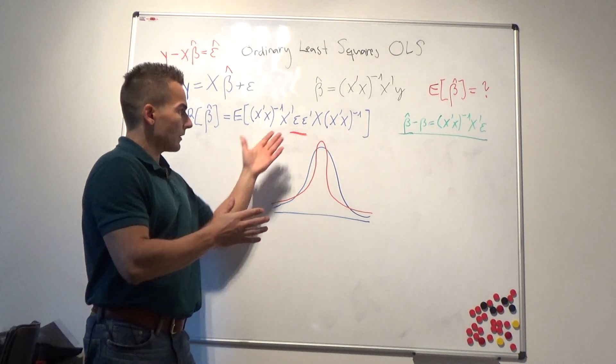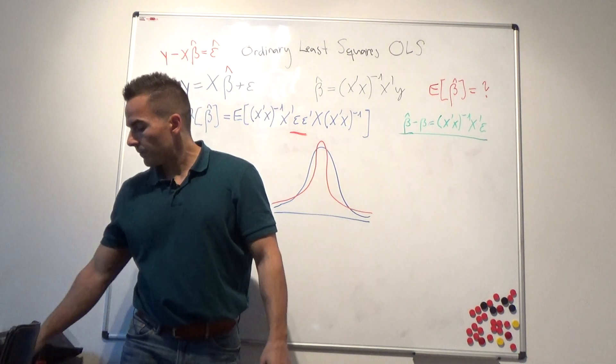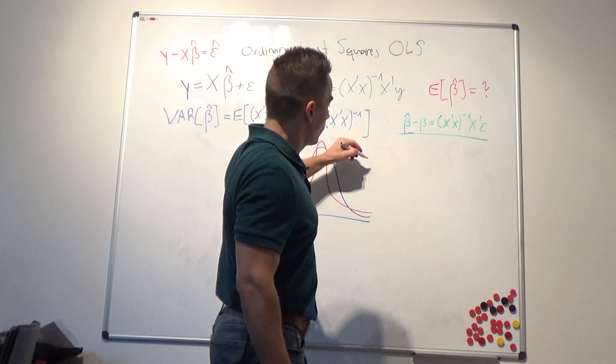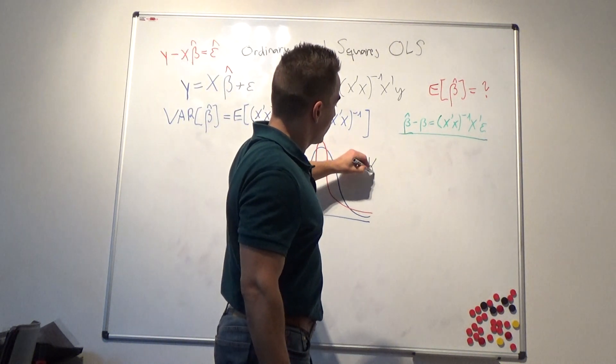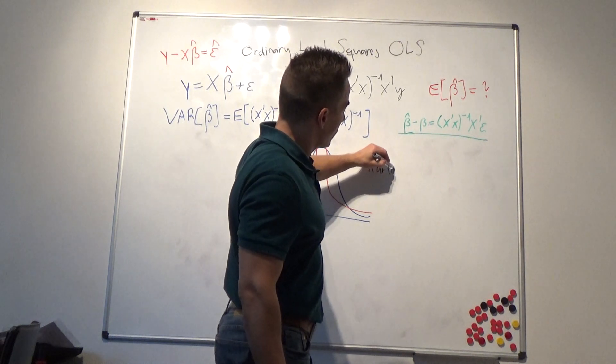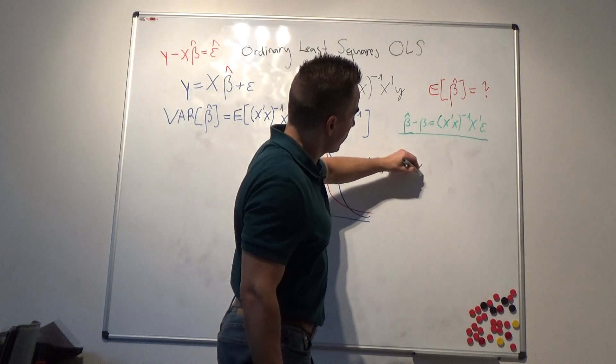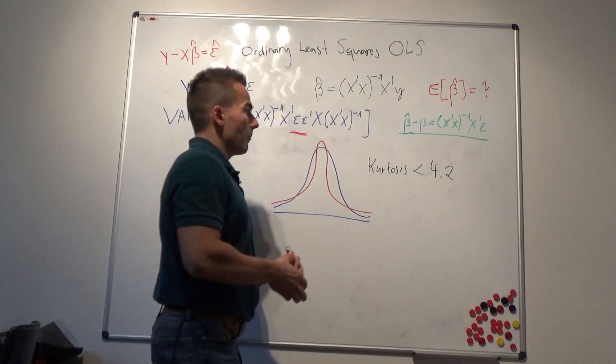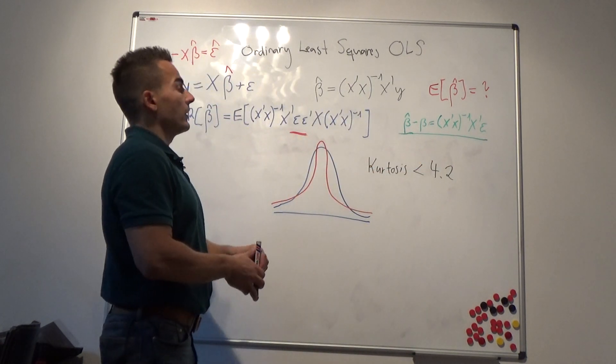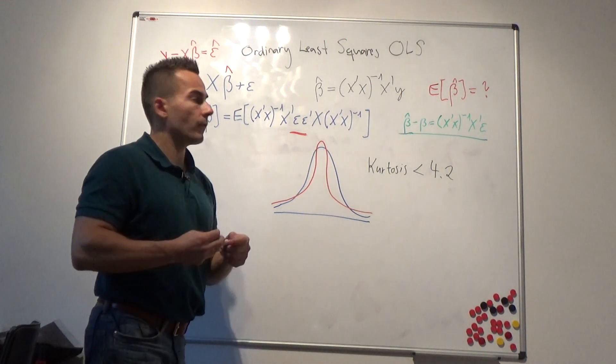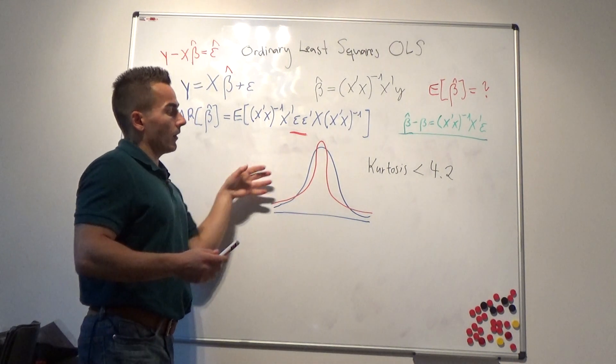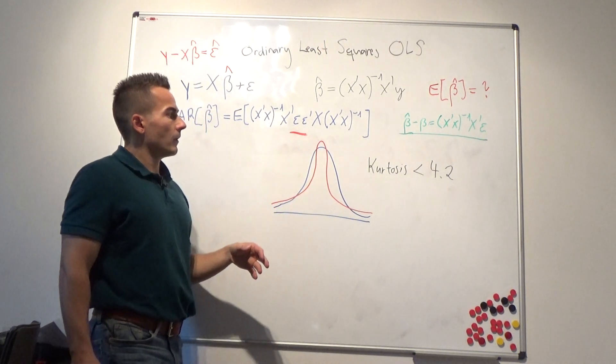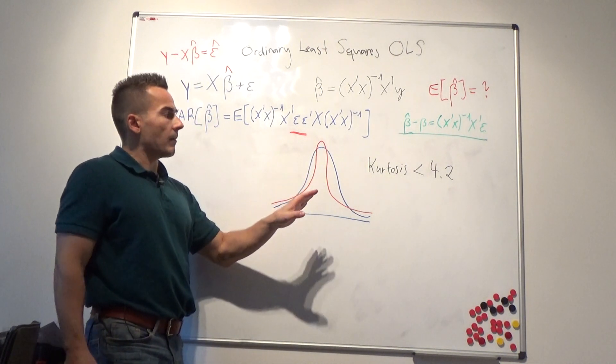If the kurtosis is less than 4.2, then things converge towards the normal distribution. So that's a strong assumption.